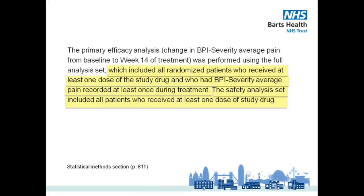This might be the reason why one participant in the Duloxetine group wasn't accounted for in the final results. When performing an ITT analysis, the difficulty lies in estimating the results for those participants for which there's no data because they withdrew from the study or didn't follow the treatment. However, there are various ways to estimate this data. We'll look now at how the authors dealt with this challenge.